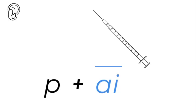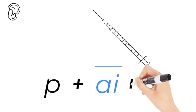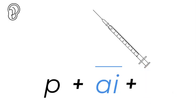So pa, A — what's missing? Pa, N. You don't say pa, I, N. You say pa, A, N. Pain.